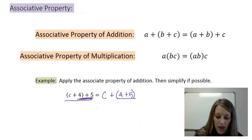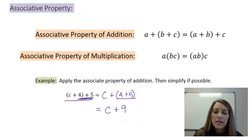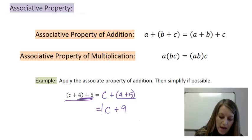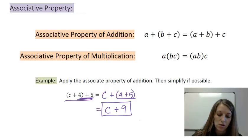I would just add 4 plus 5. So that would give me C plus 9. And since I added them, I no longer need those parentheses. So that is my final answer. So associative says we can rearrange the order of addition or multiplication of three or more numbers.